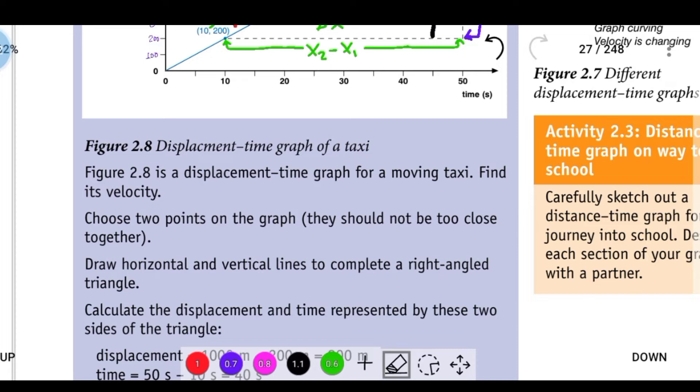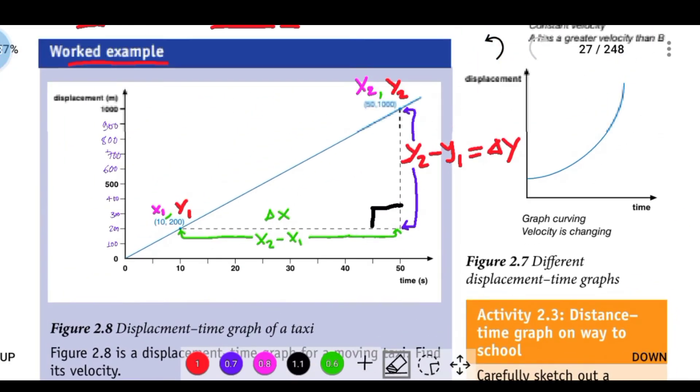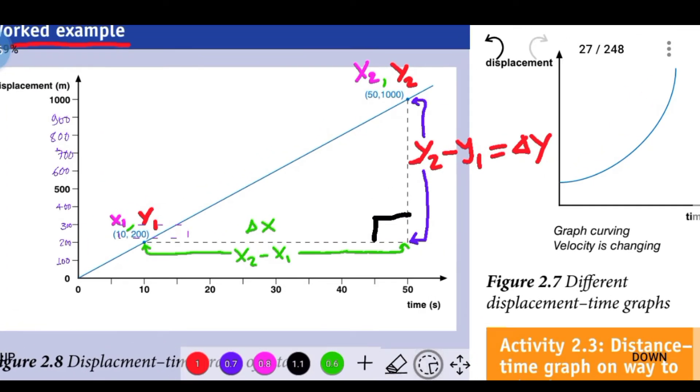First, choose two points on the graph. They should not be too close together. Then draw horizontal and vertical lines to complete a right-angled triangle.